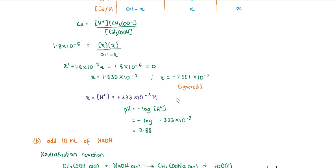But if your analyte is the base, then the initial pH is going to be the pH of that base. So it depends on the question — it's not necessarily that you start with an acid. You need to identify which one is your analyte and which one is your titrant.